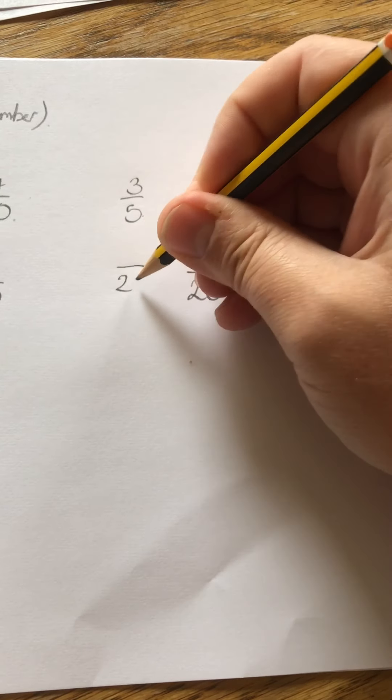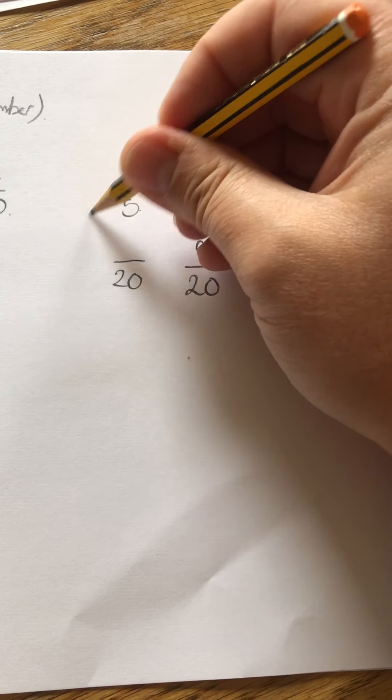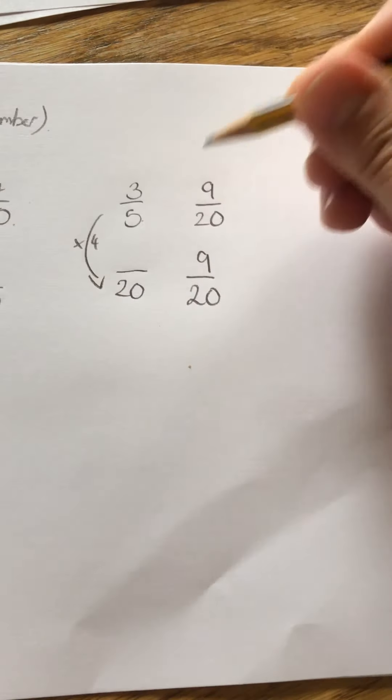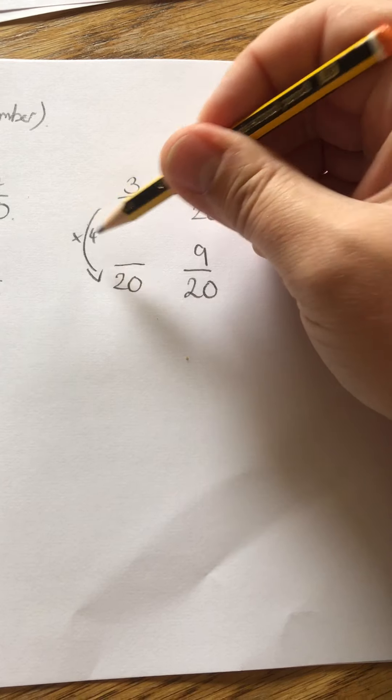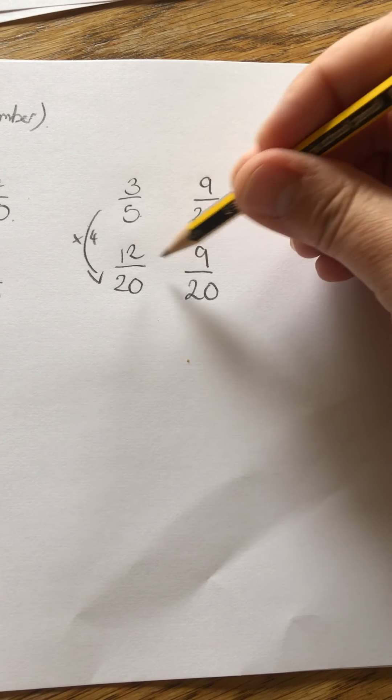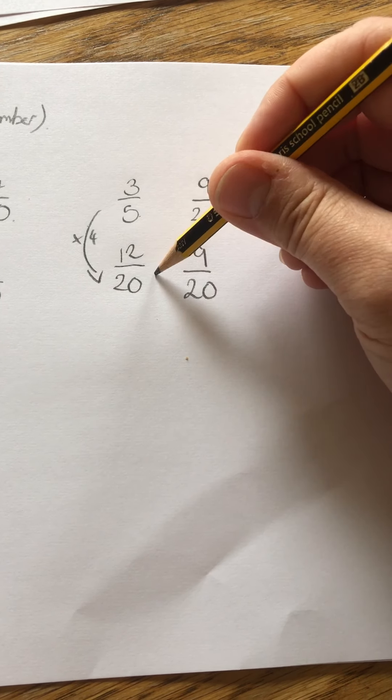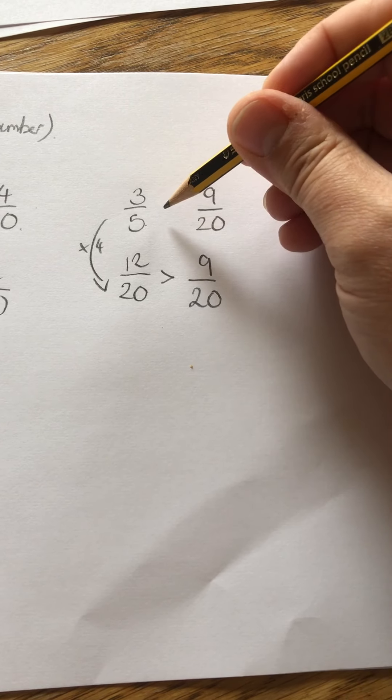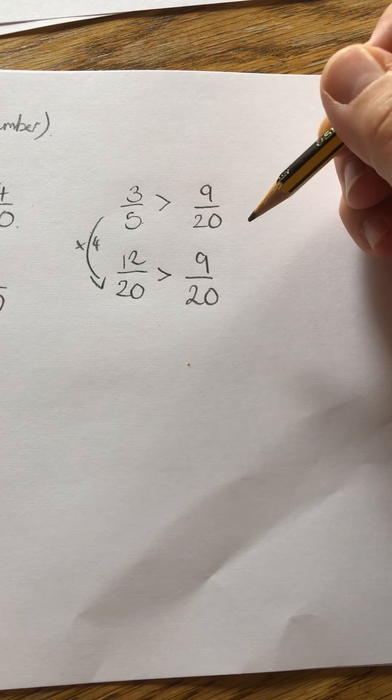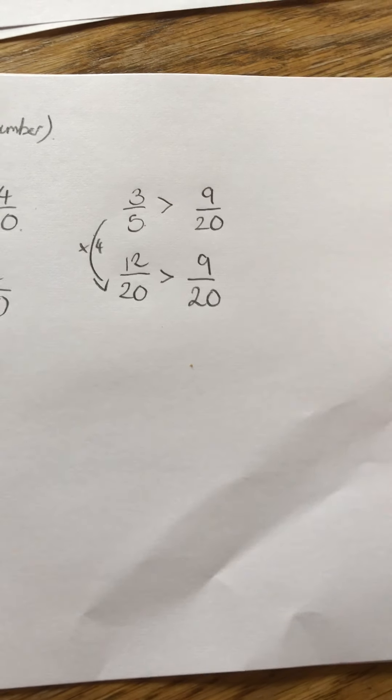How many times does five go into twenty? Well, five times four is twenty. Three times four is twelve. So the bigger of the two fractions is... twelve twentieths is bigger than nine twentieths. So three fifths is bigger than nine twentieths.